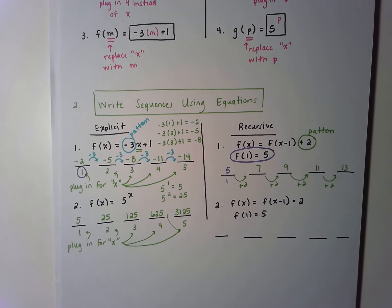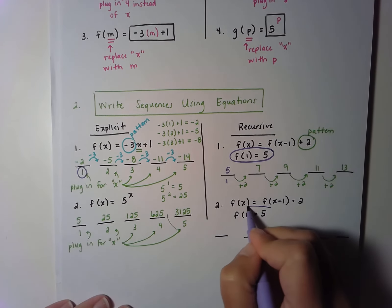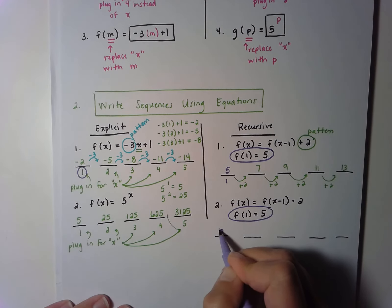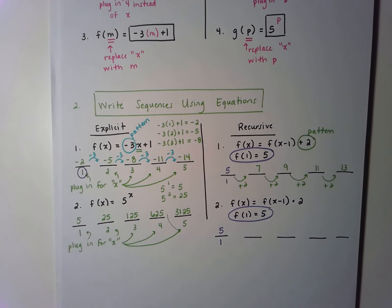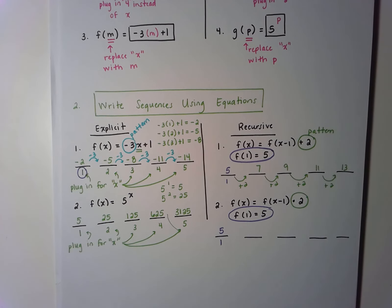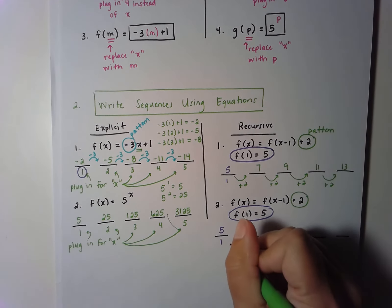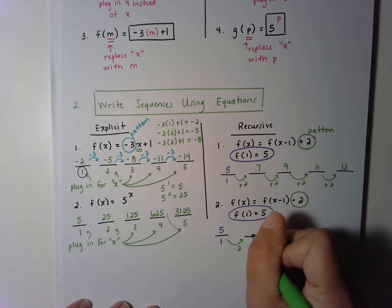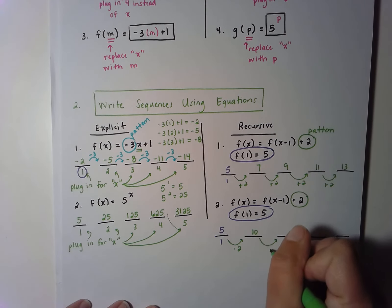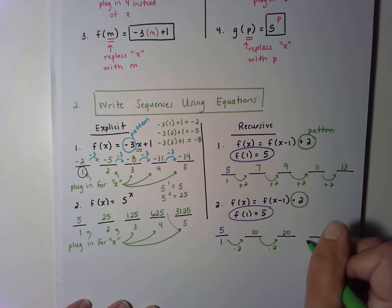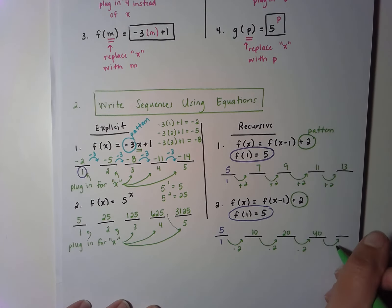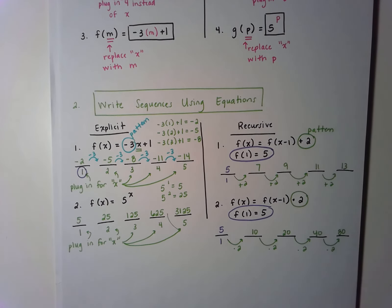For the geometric recursive example, they still give me the starting value, so I start with 5 for term number 1. Then I use the pattern — with a recursive equation it's easiest to just take the previous number and multiply by 2. So: 5, then 10, then 20, then 40, then 80. And that would be my sequence.